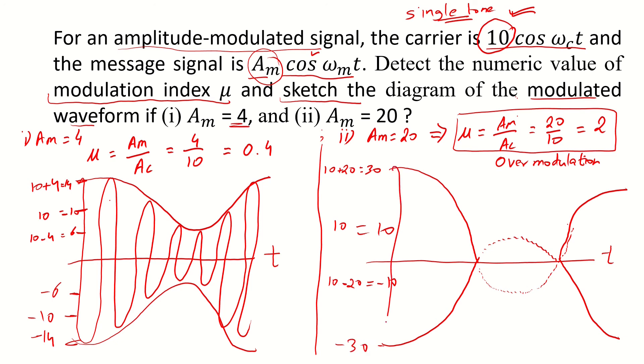The carrier frequency is embedded inside this envelope. At the zero crossing because of over modulation we would have a phase shift of 180 degrees. And similarly on this zero crossing we would have again a phase shift of 180 degrees. So this is our modulated waveform for Am equivalent to 20.